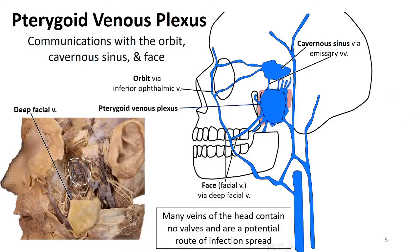Now the pterygoid venous plexus is very important because it has very close relationships and communications with structures around the orbit, the face, and the cavernous sinus.